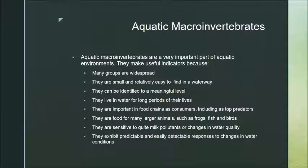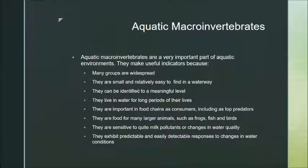One of the main biological environmental indicators used for water health is macroinvertebrates — small insects visible to the naked eye that are very easy to sample and identify. Many groups are widespread, so this indicator can be used all over Australia. They live in water for long periods of their lives and are really important in food chains as consumers. Because they're so important in the food chain, large numbers can support a wide range of other animals like birds and other consumers. They're food for many larger animals such as frogs, fish, and birds, and they're sensitive to pollution.